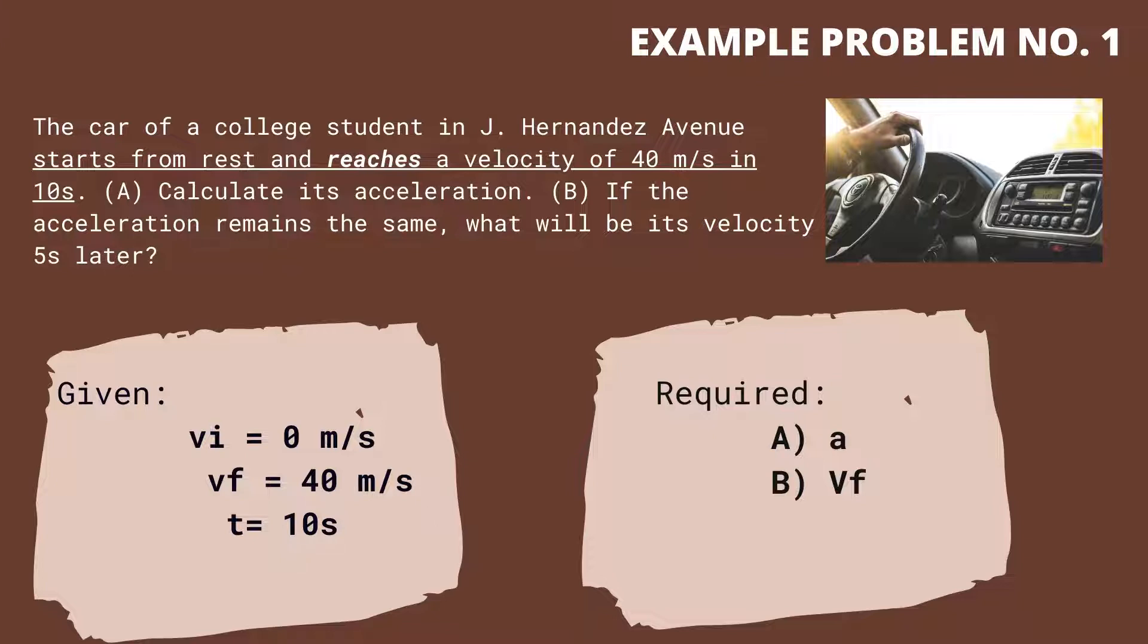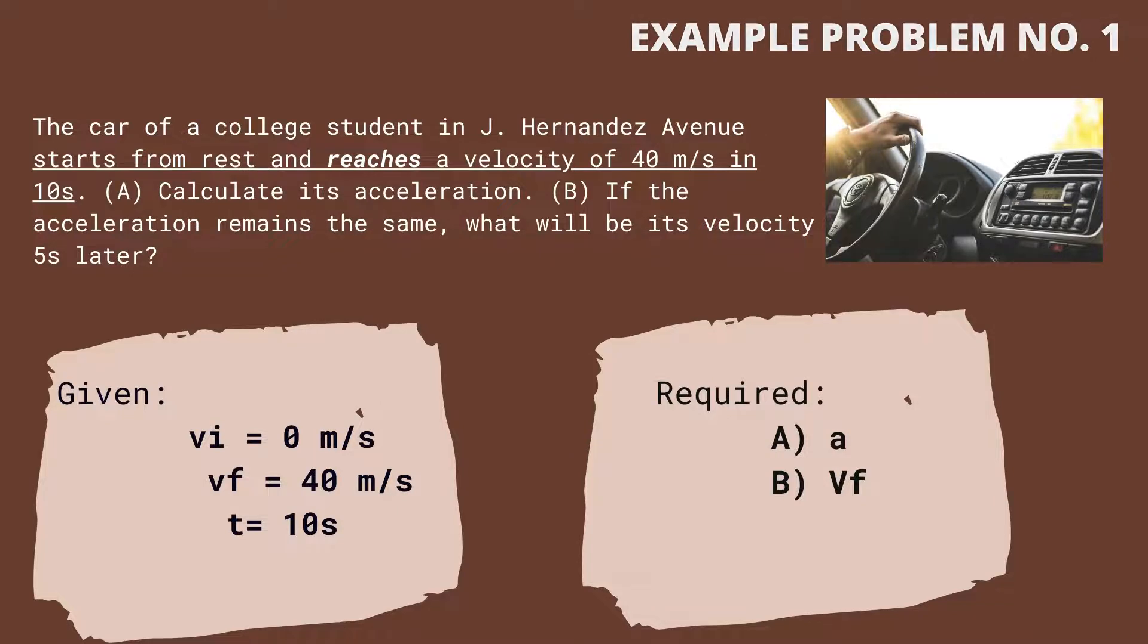The unknown physical quantity for question (A) is the acceleration, represented by lowercase a. For letter (B), v sub f or the final velocity is the unknown variable.